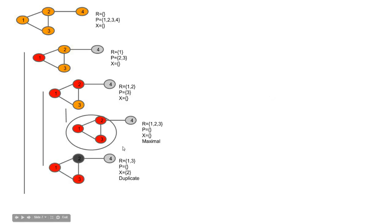Recursing back, we had R = {1,2} and now consider vertex 3 instead of 2. X = {2}, R = {1,3}, P = empty (neighbors of 3 and 1 intersect to empty). Since X = {2} and P ∪ X is not empty, it cannot be reported as maximal — it is a duplicate, because {1,3,2} has already been reported. We ignore it. Going back further to R = {1}, we now consider vertex 2: X = {1}, P = neighbors of 2 = {3,4}.